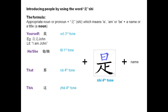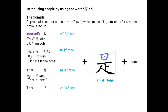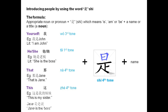For example, 我是John — I am John. 他是老板 — She is the boss. 那是Jane — That is Jane. 这是我的妹妹 — This is my sister. You can also say Jane是老板 — Jane is the boss.